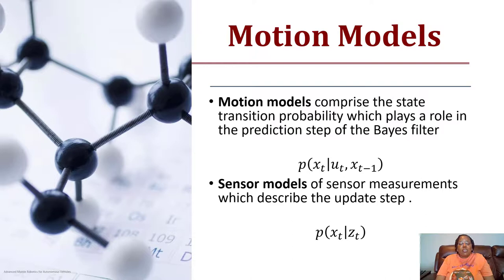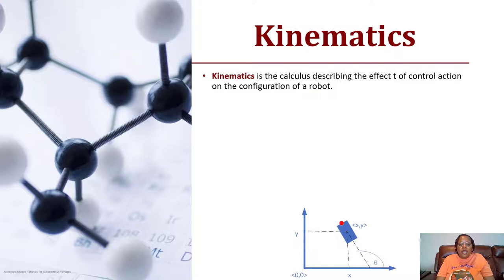A motion model is comprised of the state transition probability which plays a role in predicting each step of the Bayes filter. That's the probability that I am in state x at time t given a control input at time t and my previous state t minus one. Whereas the sensor model is based upon sensor measurements and updates every step. That's the probability that the robot is in state t given a measurement at time t.